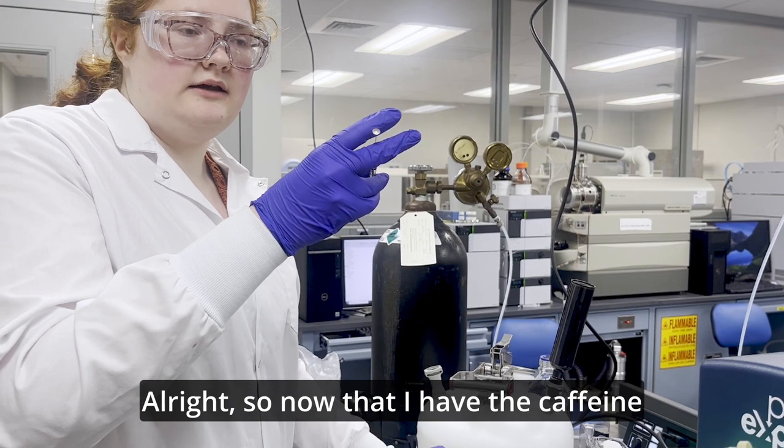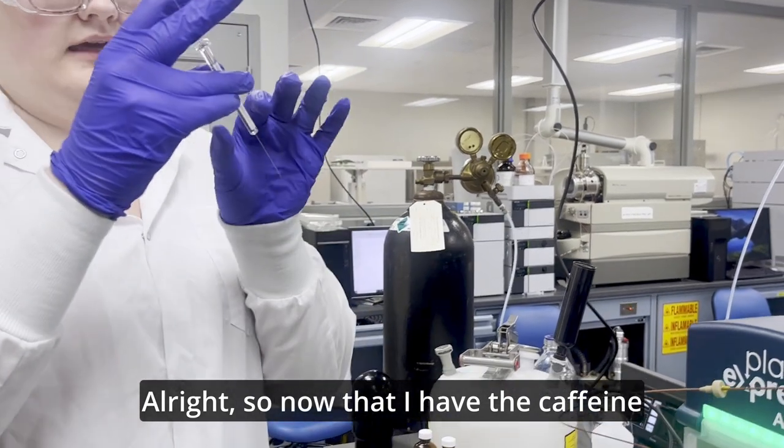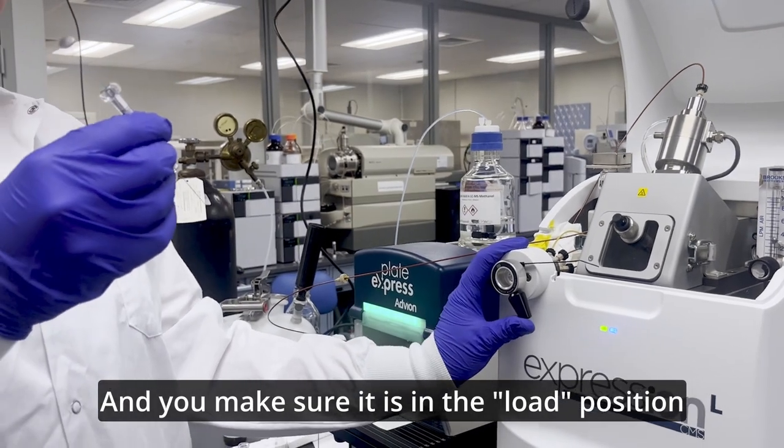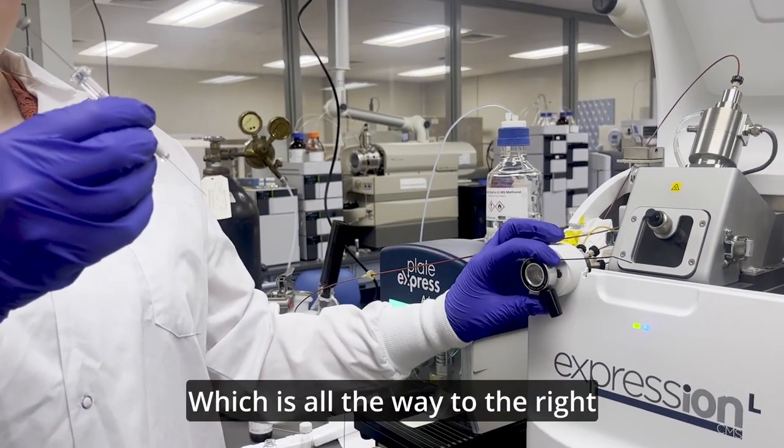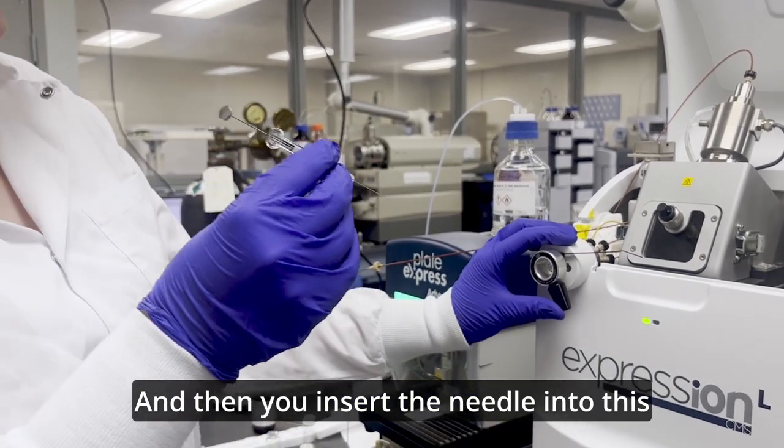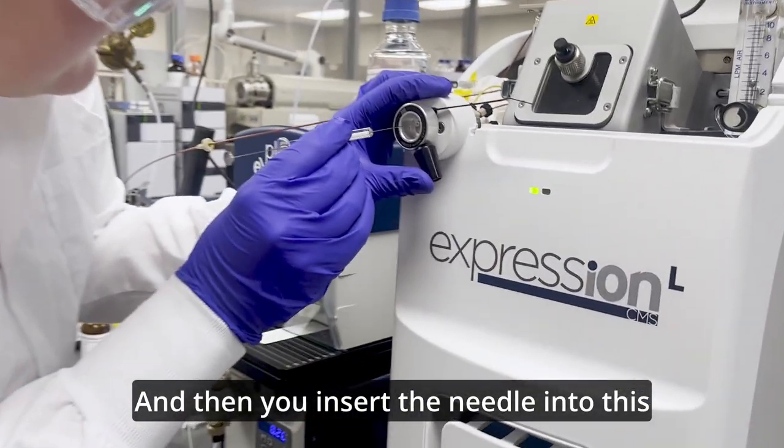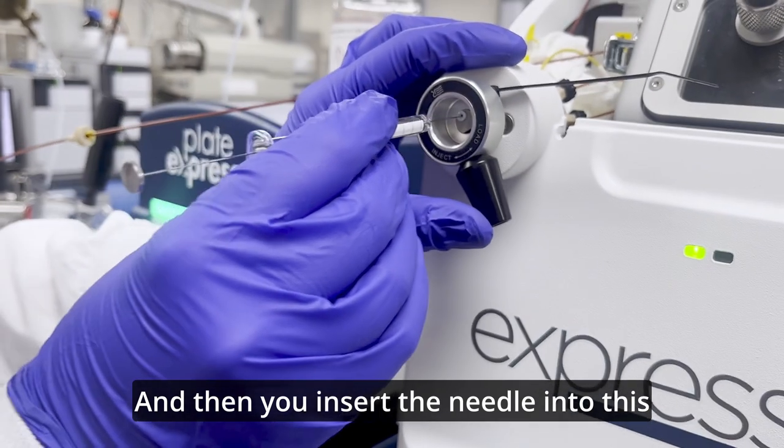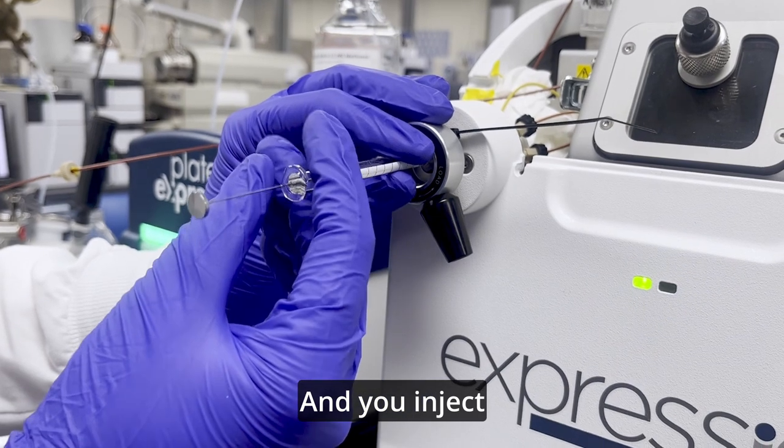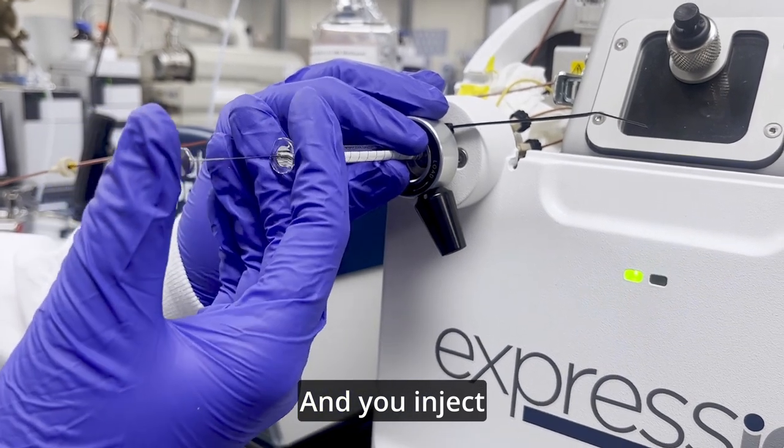So now that I have the caffeine, you go over here to the Reodyne valve and you make sure it is in the load position, which is all the way to the right. And then you insert the needle into this and you inject.